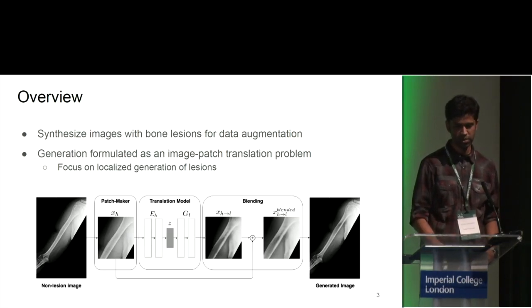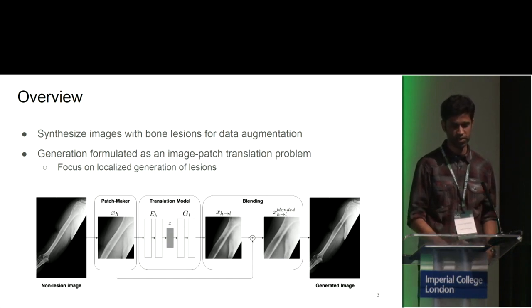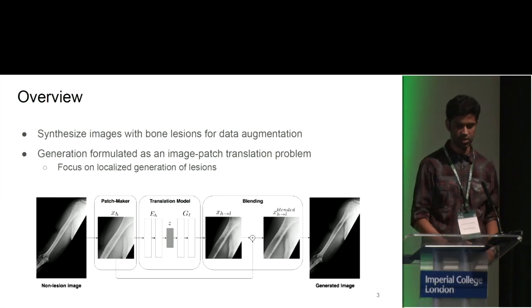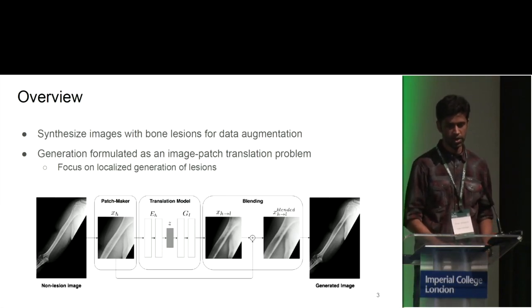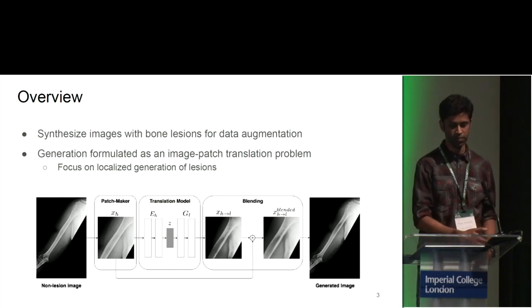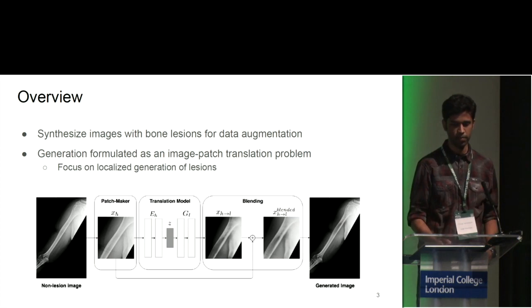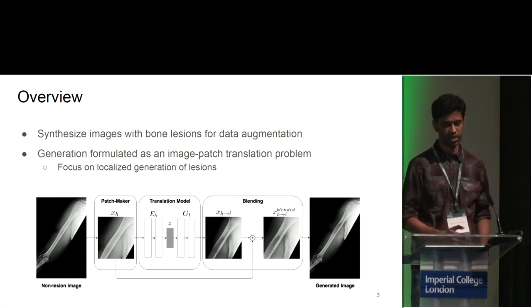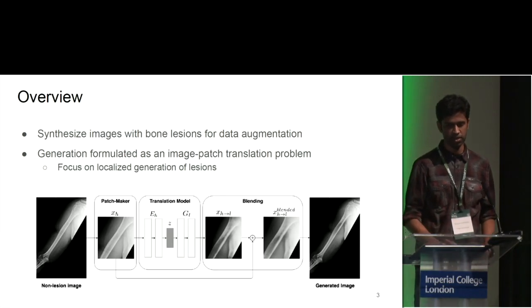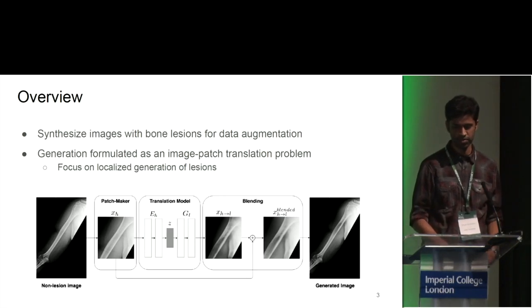Given an input image, we first generate a local image patch. This patch is then used to train an unsupervised image-to-image translation model as developed by Mingyu et al., to generate bone lesion patches from non-bone lesion patches. These bone lesion patches are then blended onto the original image to create synthetic bone lesion images, from which we mine for hard positives using a pseudo-relabeling approach with a baseline classifier, and these hard-mined positives are augmented into the training dataset.